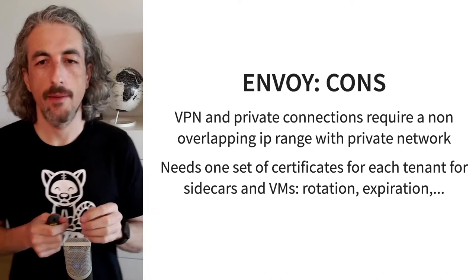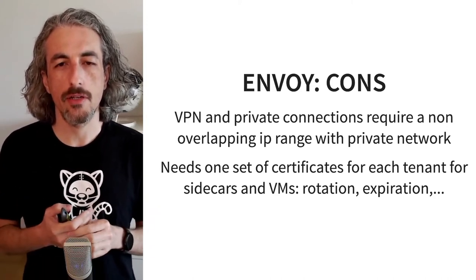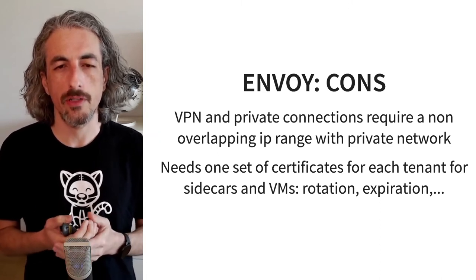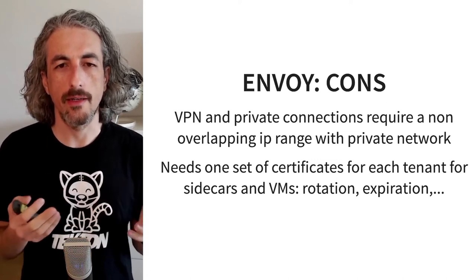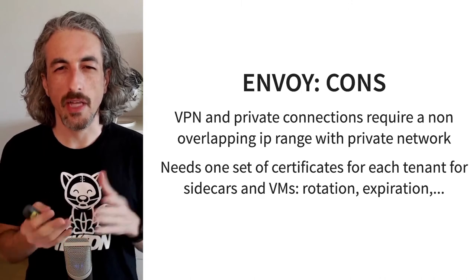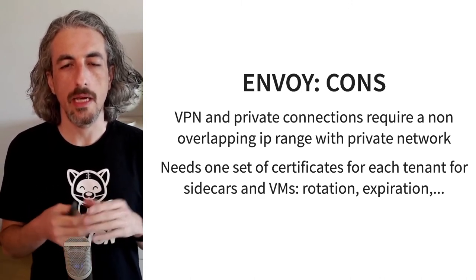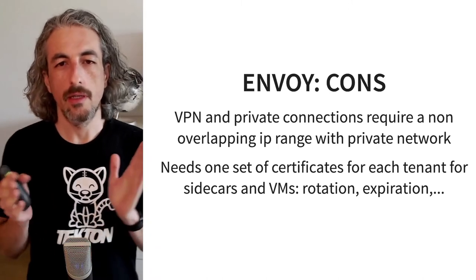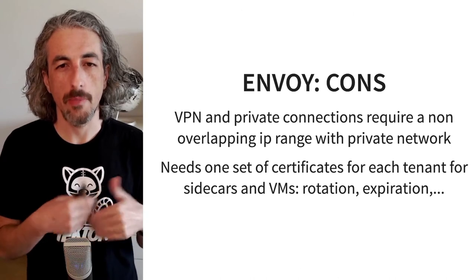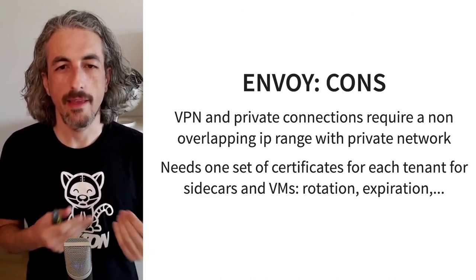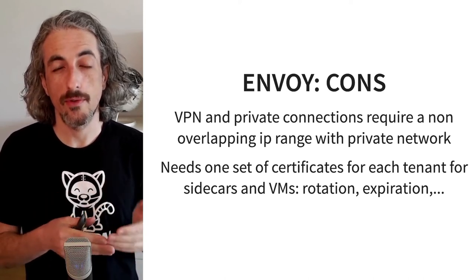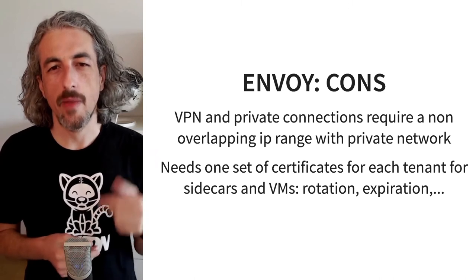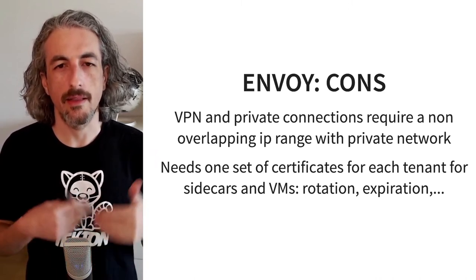There are some drawbacks. VPN and private connections require that the VNet has no overlapping IP range with the customer's private network, so it requires some interaction with the customer to know their range of IPs. Certificate management becomes a bit complex because we need one set of certificates for each tenant for both the sidecars and the virtual machines. We have a certificate authority and we issue certificates for each tenant — for the sidecars, for the VMs, for all the pods — and then we have to rotate them, handle expiration, all these things. That becomes a bit complicated.